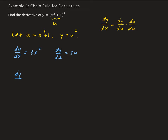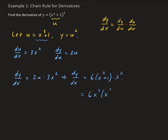So we have dy/dx equals dy/du, which was 2u, times the derivative of u with respect to x, which was 3x squared. So we have dy/dx equals 2 times 3 is 6, and then u was x cubed plus 1, times x squared. We can write it as 6 times x squared times x cubed plus 1. So that is the derivative.